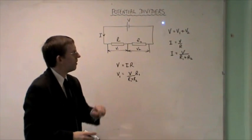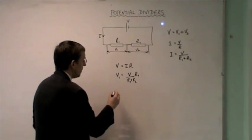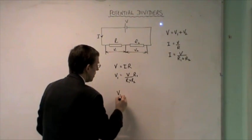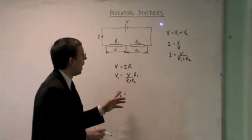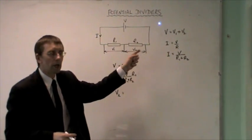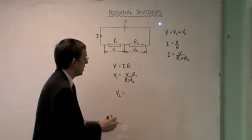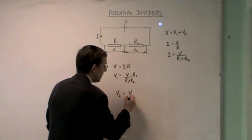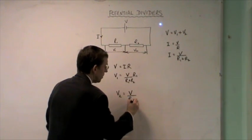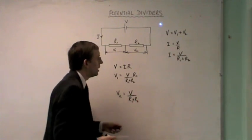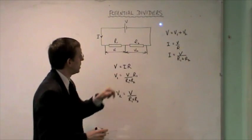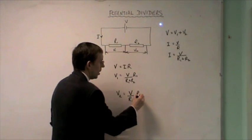Similarly, this voltage here V2 will be equal to I. Well, it's a series circuit so the current is the same everywhere, so the current is still this. So V2 will be equal to V over R1 plus R2 times, this time the resistance is R2.